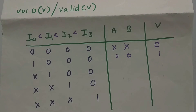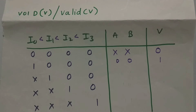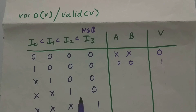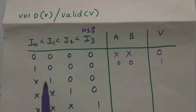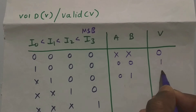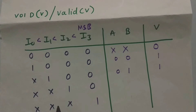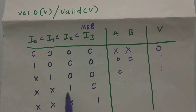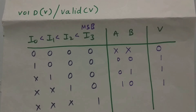In a priority encoder we have two types of priority: MSB bit or LSB bit. Here we are considering MSB priority. Whenever I1 is one and we don't care about I0, the output will be zero one and the valid bit will be high. When I2 is one, we don't care about the combinations of I0 and I1 — we only consider I2, so the output is one zero and the valid bit is one. The MSB bit has the highest priority.